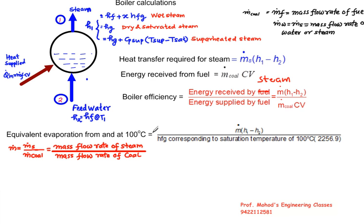Equivalent evaporation from and at 100 degree Celsius is M dot into H1 minus H2 upon HFG corresponding to saturation temperature of 100. From steam table this value is approximately equal to 2256.9. Mass M dot here is basically ratio of mass flow rate of steam upon mass flow rate of coal.